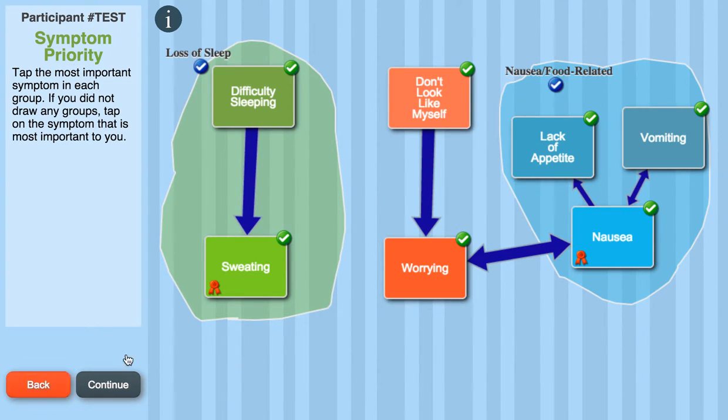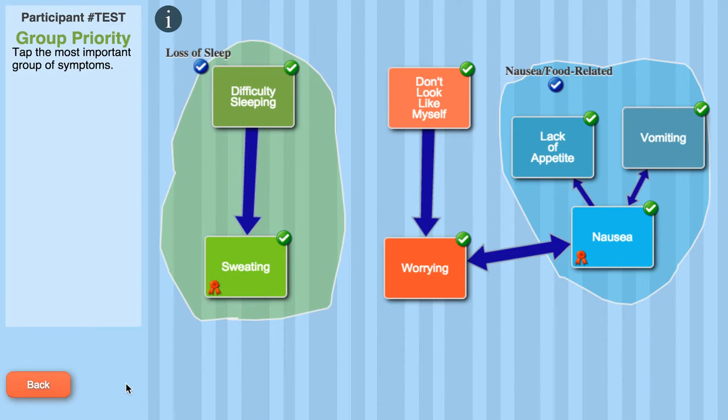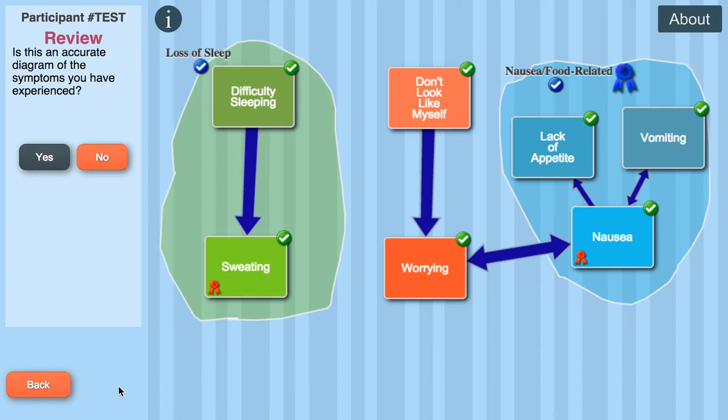Once you've finished, click Continue. If you have more than one group, like I do, you can also say which group is the most important group, and I believe that it is my food-related group. Once you've selected that, you can click Continue to go to the Review page.